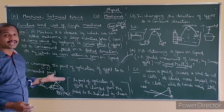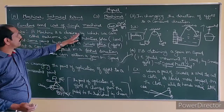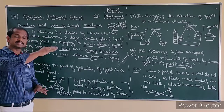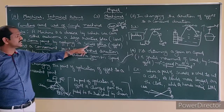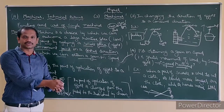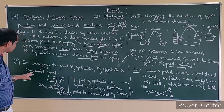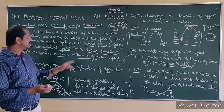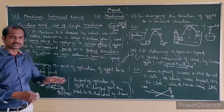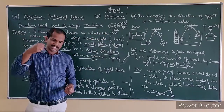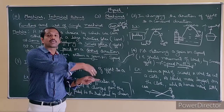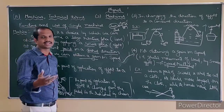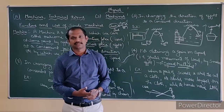A machine is a device by which we can either overcome a large resistive force — that is the load — by applying a small force, which may act as a force multiplier, or change the point of application to a convenient point, or change the direction, or act as a speed multiplier. In all cases we want to apply a small force — our effort is less — but we are overcoming a large resistive force in a desired direction. This is how we define what we mean by machines.